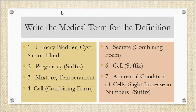Number 7, we want the suffix that means abnormal condition of cells, slight increase in numbers.